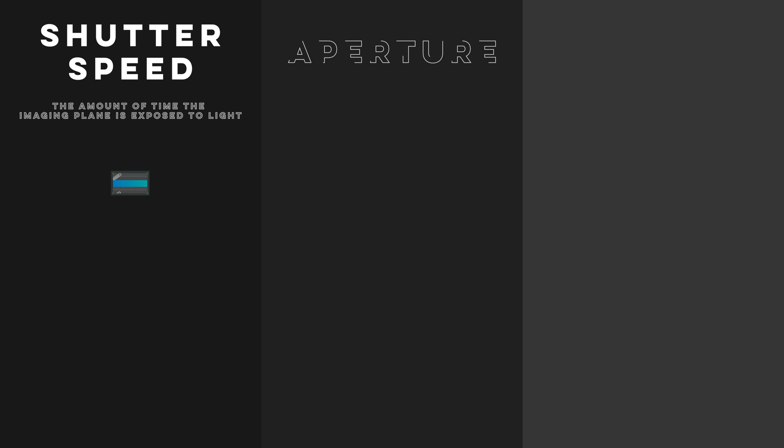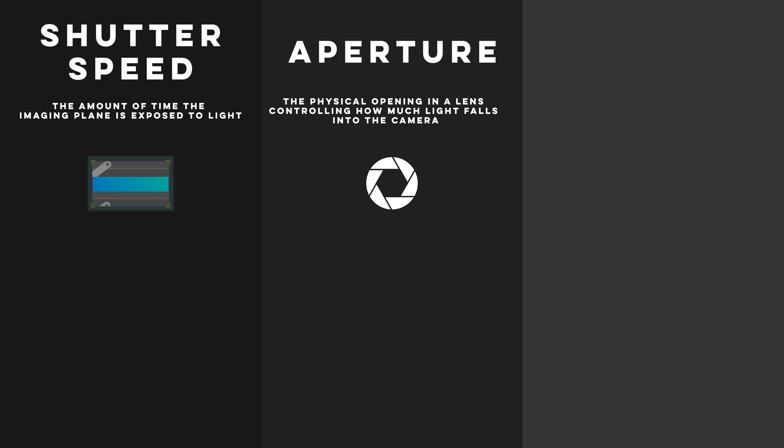Since the beginning of photography, there have been three basic elements to be considered when taking a photo. Shutter speed — the amount of time the imaging plane is exposed to light. Aperture — the physical opening in a lens controlling how much light falls into the camera. And ISO — the amount that light is amplified to either brighten or darken an image. Together, these three elements make up what photographers call the exposure triangle.